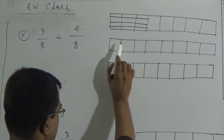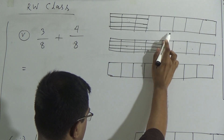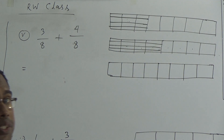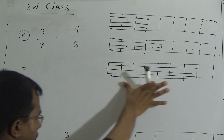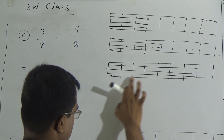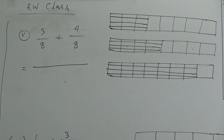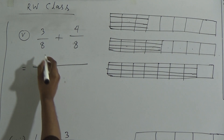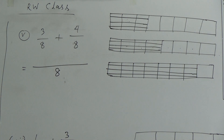We will add 1 taka to the taka figure and subtract 100 from the poisha figure. Then it will be 104 taka and 15 poisha. So the answer will be 104 taka and 15 poisha.